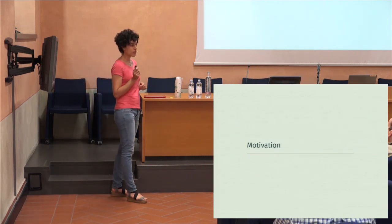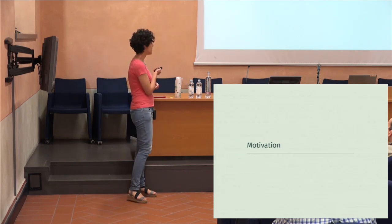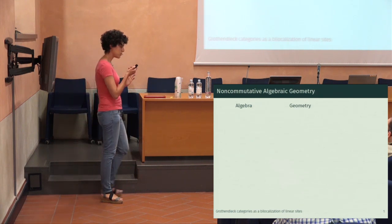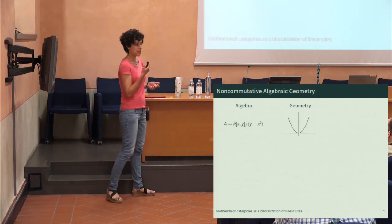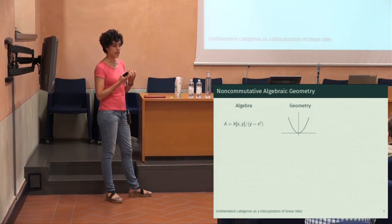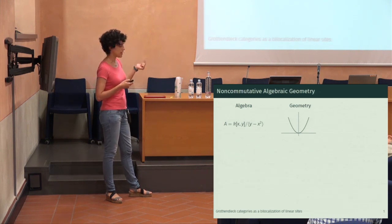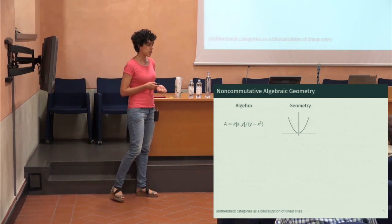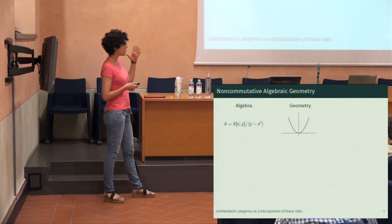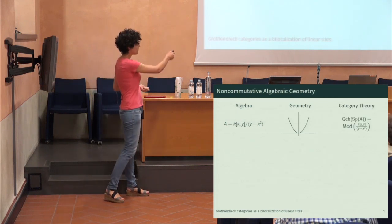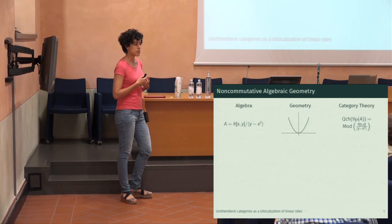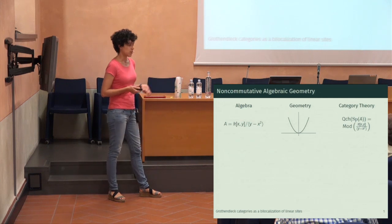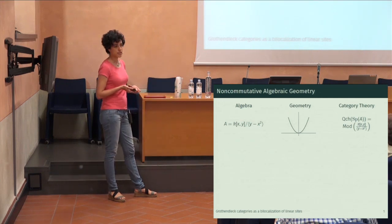I work in non-commutative algebraic geometry. In the classical setup, we have algebraic geometry with our building blocks being affine schemes. If we take K a commutative ring and take the spectrum of this ring, we obtain the affine scheme. But there's a third level of language here, which is category theory. In my case, I will be considering quasi-coherent sheaves over a scheme, and in the case of the affine scheme, this is just a category of modules.